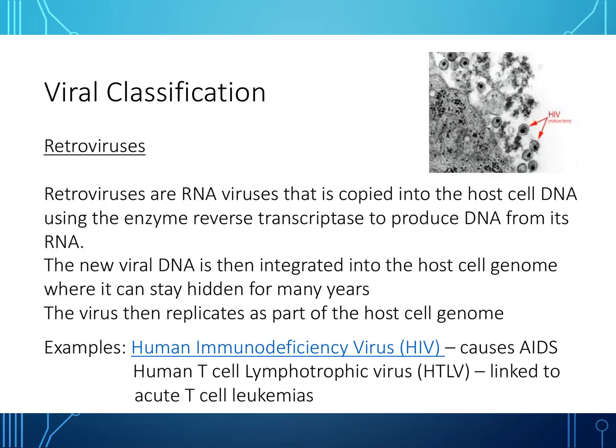Another way to classify viruses is retroviruses. Retroviruses are different from DNA and RNA viruses in that they are RNA viruses, but they are copied into the host cell DNA using the enzyme reverse transcriptase to produce DNA from their RNA. The new viral DNA is then integrated into the host cell genome, where it can stay hidden for many years, and the virus reproduces as part of the host cell genome. Examples are HIV which causes AIDS, and human T-cell lymphotropic virus which is linked to acute T-cell leukaemias — white blood cell cancers.